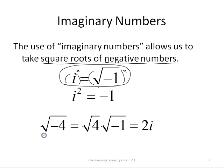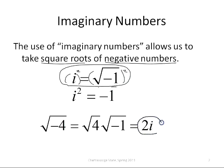Having this value of i enables us to take square roots of things like the square root of negative 4. If we think of the negative 4 as 4 times negative 1, then we have the square root of 4 times the square root of negative 1. The square root of 4 is 2, and the square root of negative 1 is i.